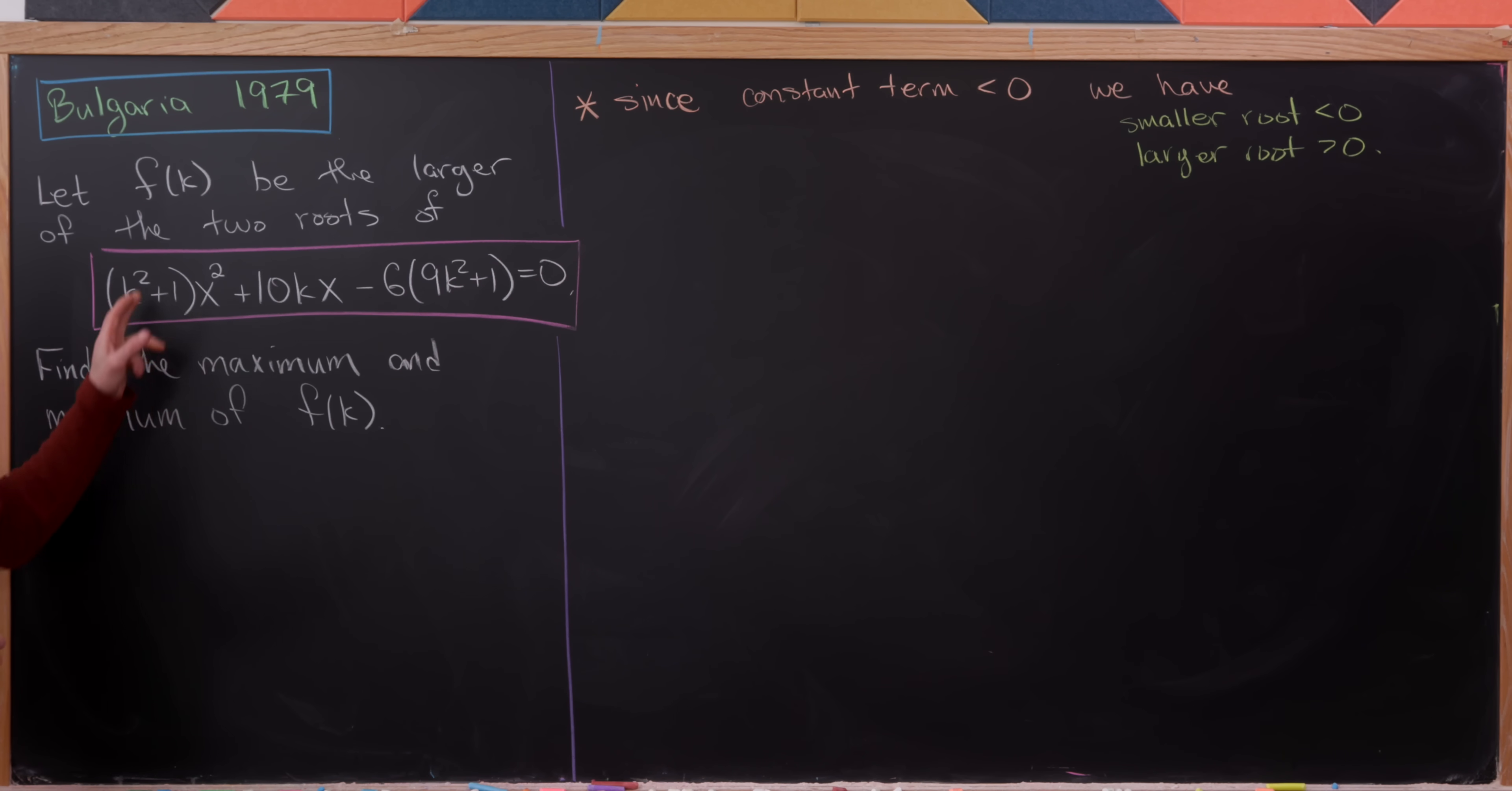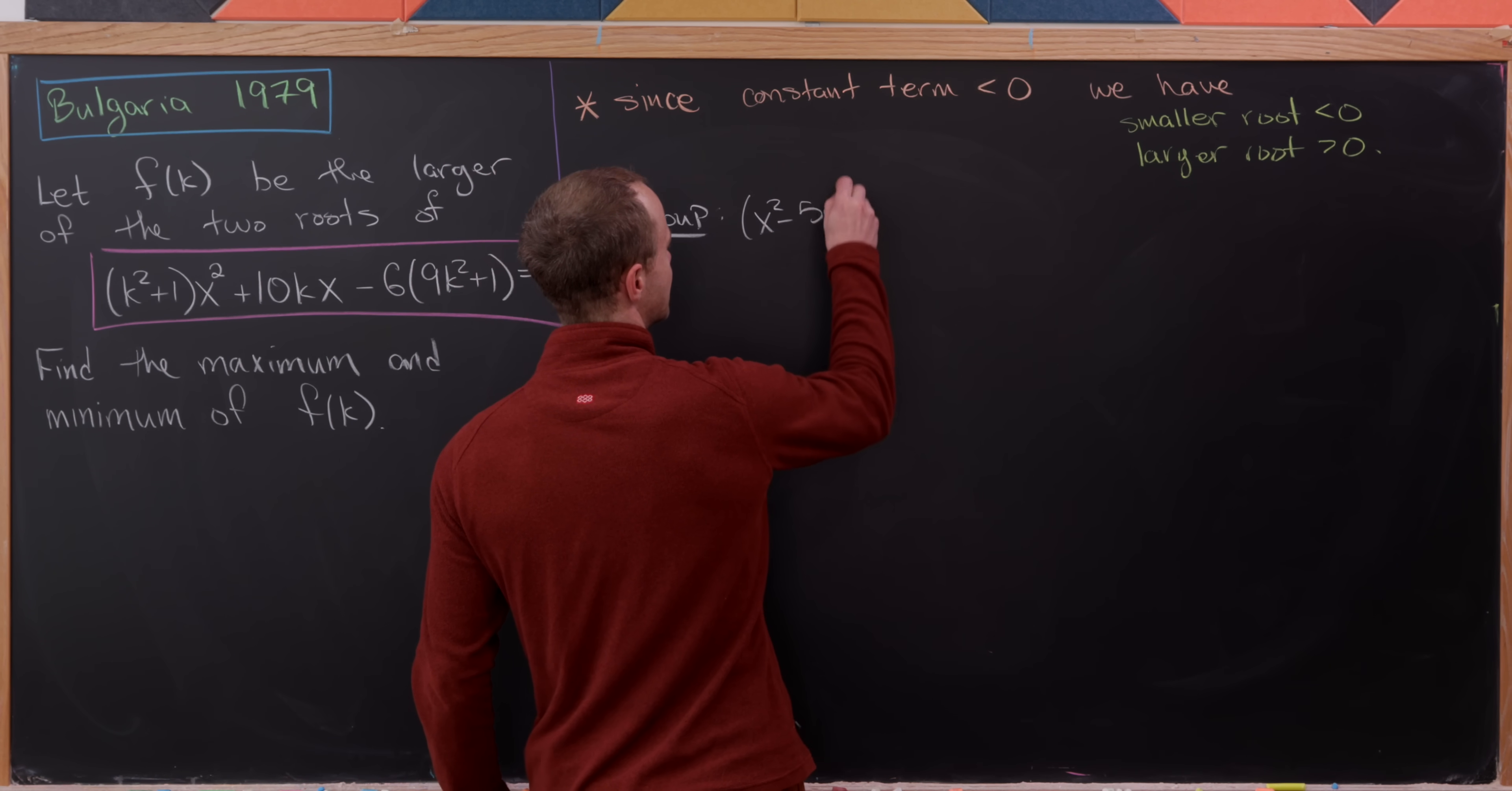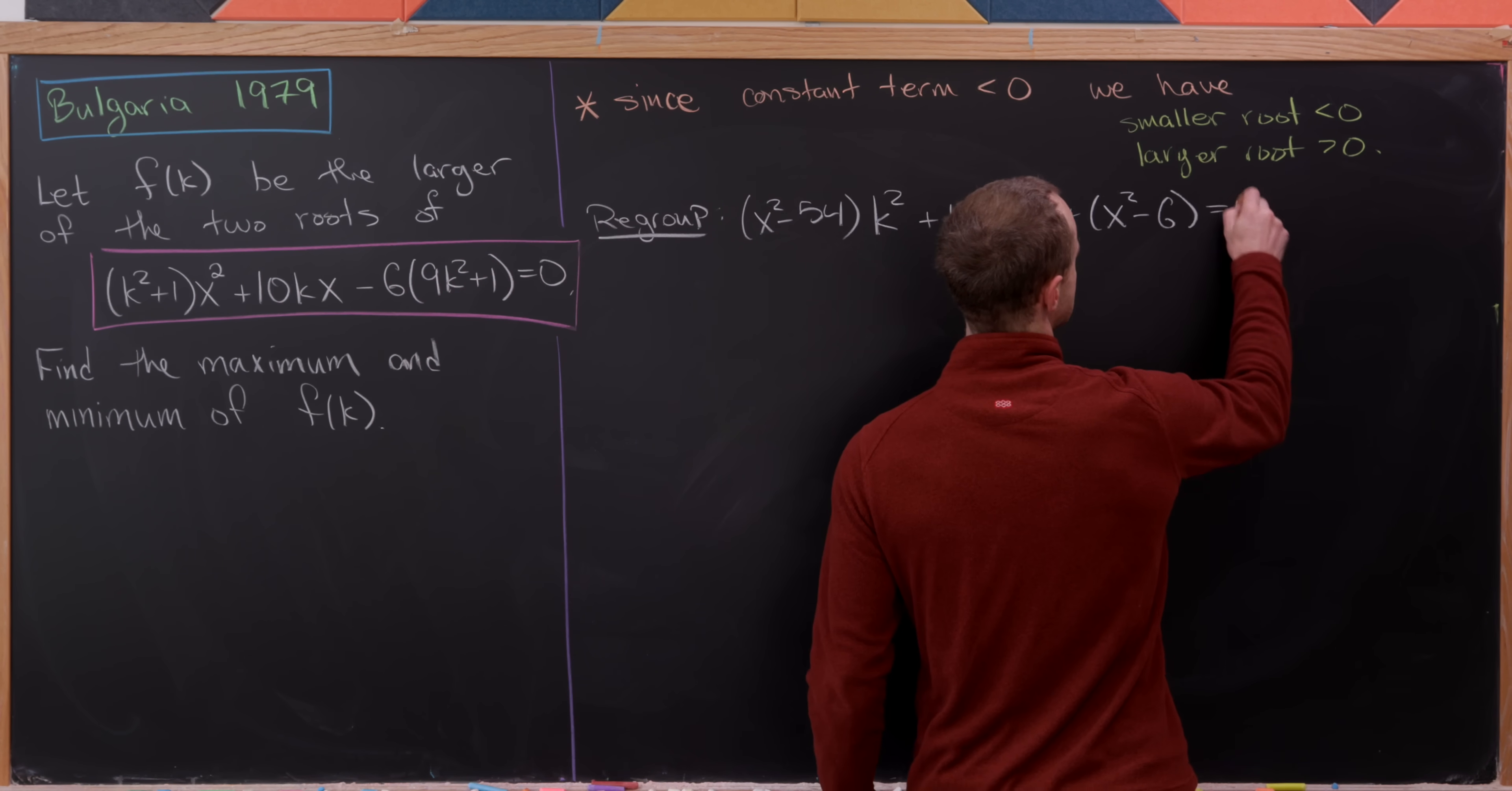In order to find the values of k that are allowable, what we'll do is rewrite this as a quadratic equation where we're using k as the variable instead of x. That's just regrouping. The coefficient of k² will be x² - 54, so we have (x² - 54)k². The coefficient of k is simply 10x, so we have +10xk. And then the constant term will be x² - 6. So we have (x² - 54)k² + 10xk + (x² - 6) = 0.